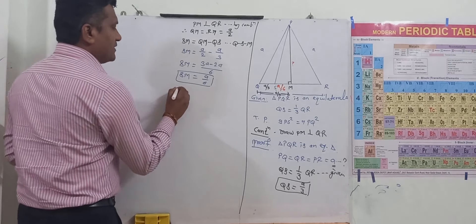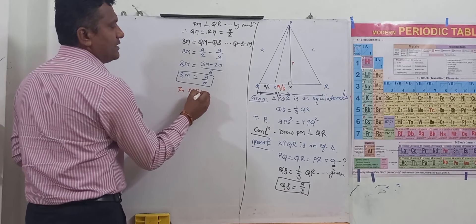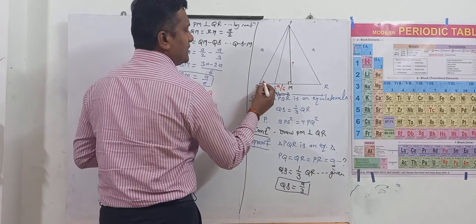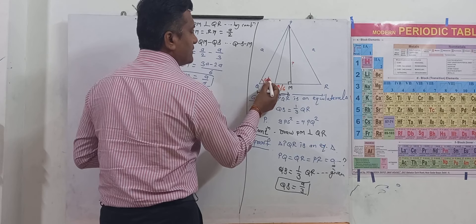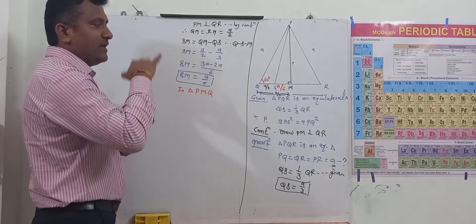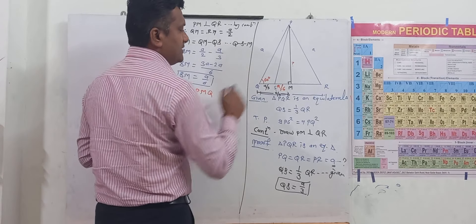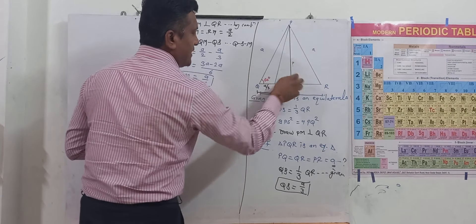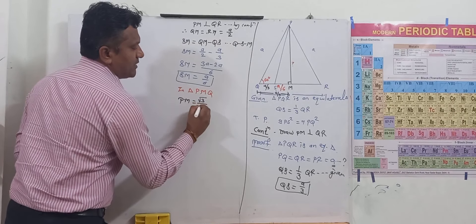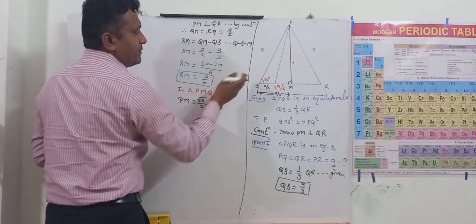Here in triangle PMQ, what is angle? We have it is a 60 degree, that it is an equilateral triangle. Therefore, side opposite to 60 is PM. As we know, PM is root 3 by 2 of PQ.